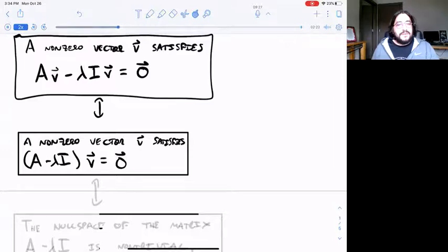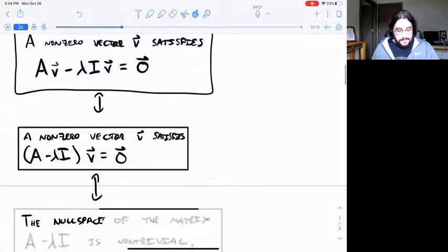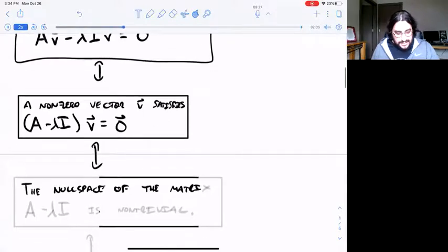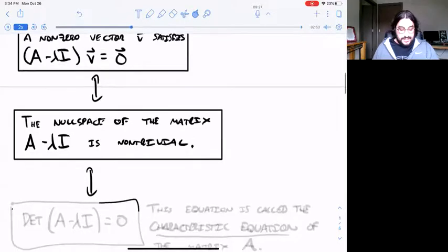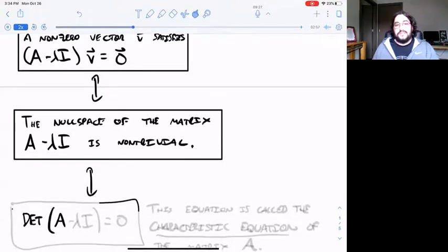The reason I do that is because I want to factor out the vector v from that left hand side, because we then get that the equation (A minus lambda I) times v equals zero has a non-trivial solution.